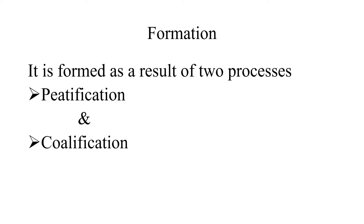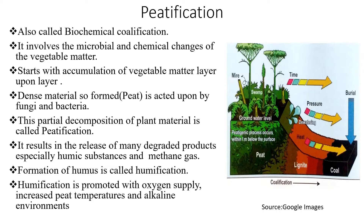Continuing with coal, let us talk about its formation. Coal is formed as a result of two processes: petrification and coalification. Petrification, also called biochemical coalification, involves microbial and chemical changes of vegetable matter.